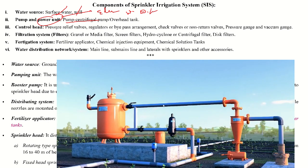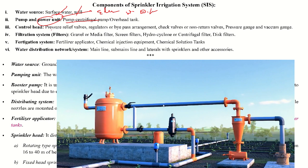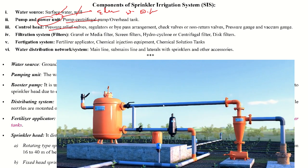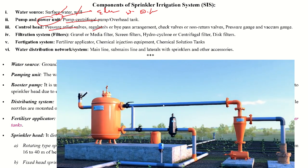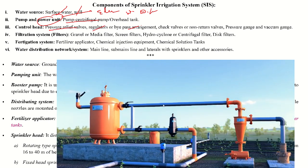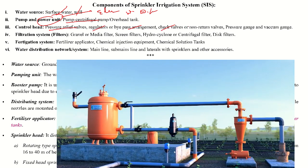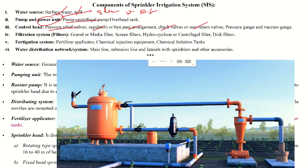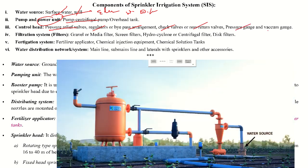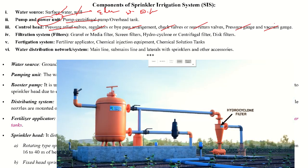The control head consists of your relief valve, regulators, bypass arrangements, check valves, non-return valves, pressure gauges, vacuum gauges, and other accessories.